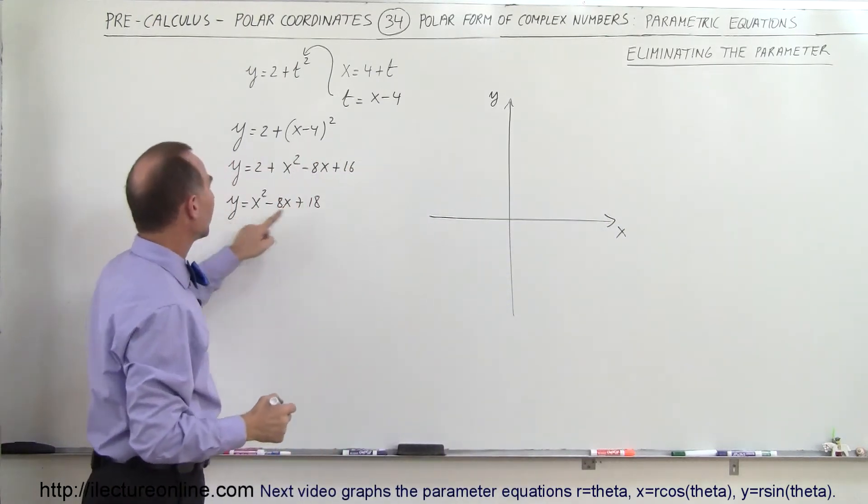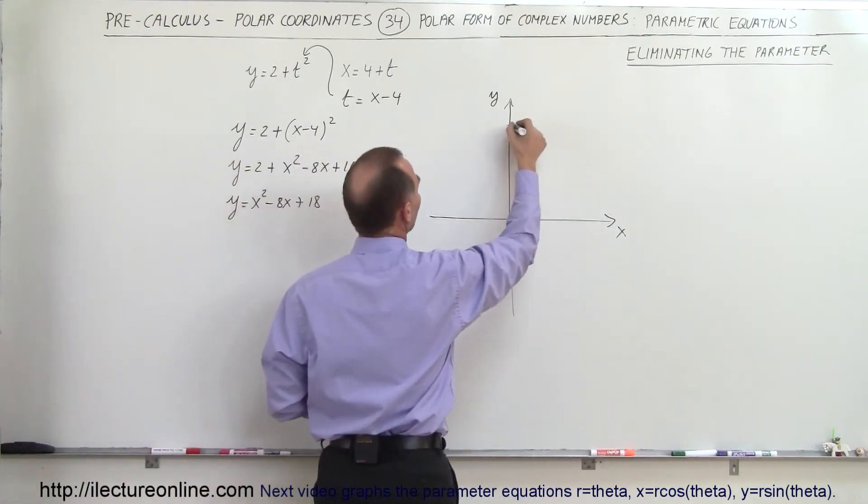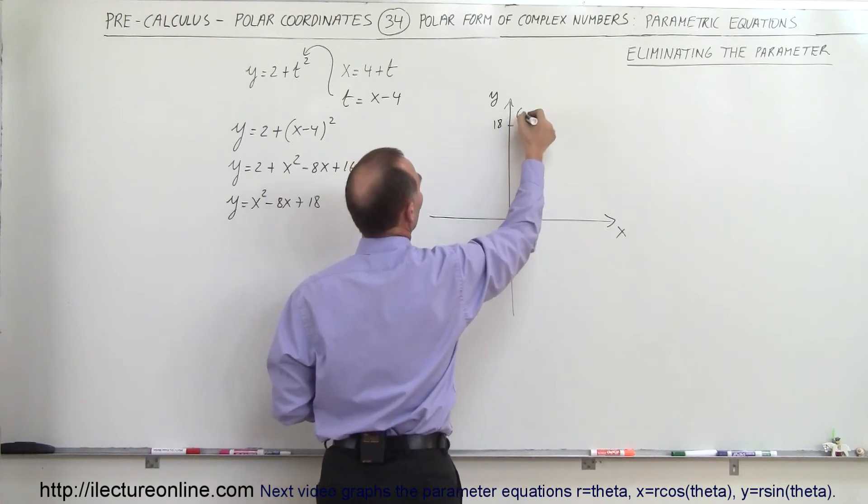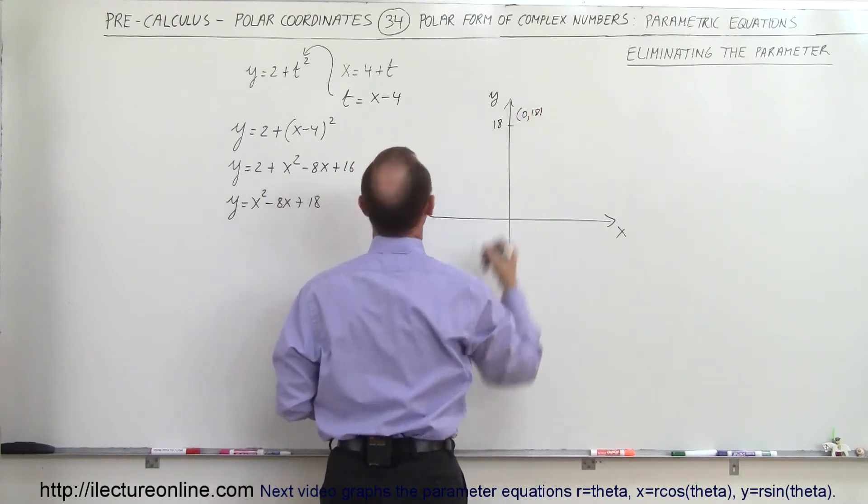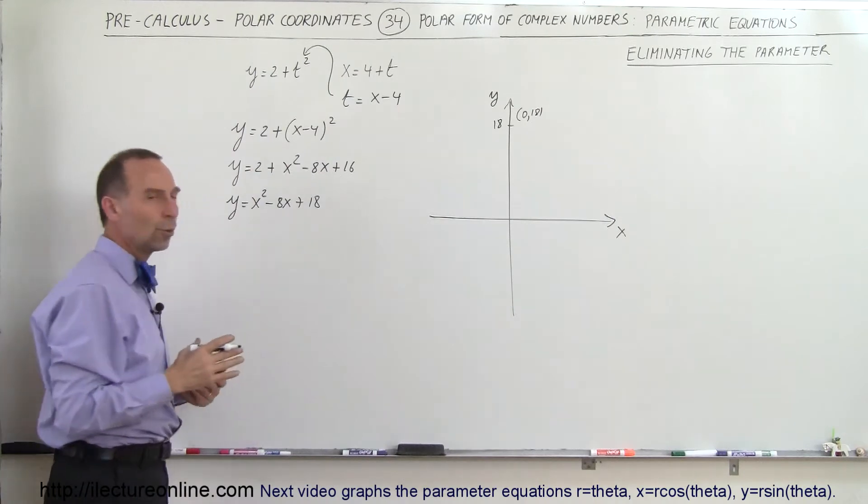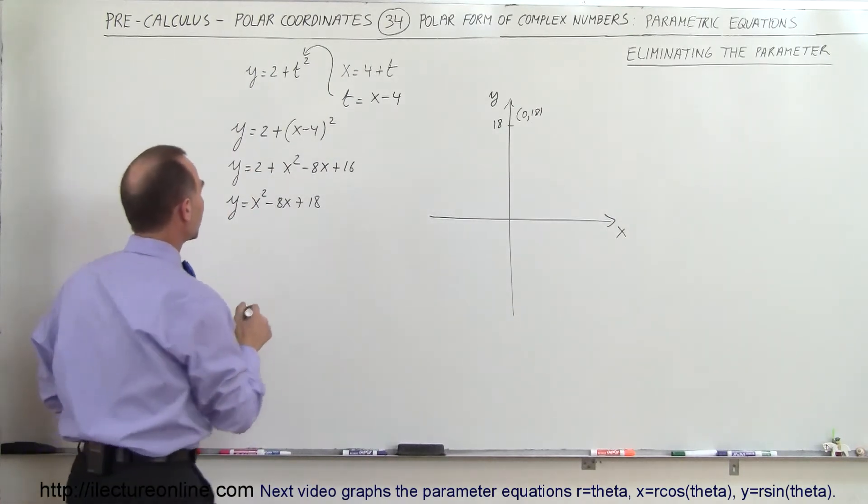When x is equal to 0, y is equal to 18, so that would be right about here somewhere. So this is the point (0, 18).